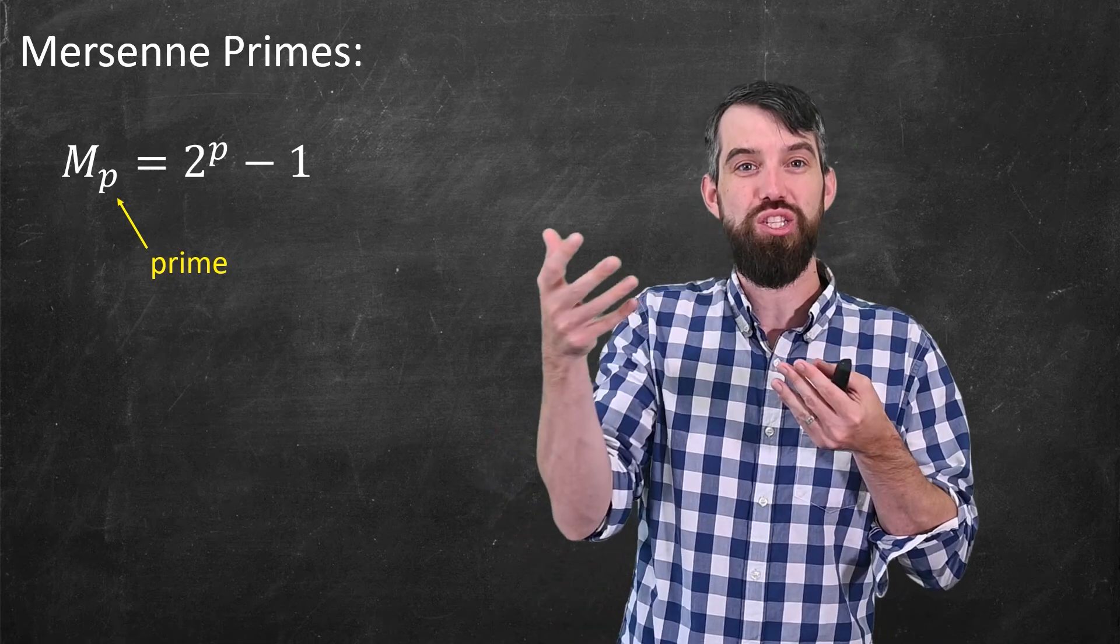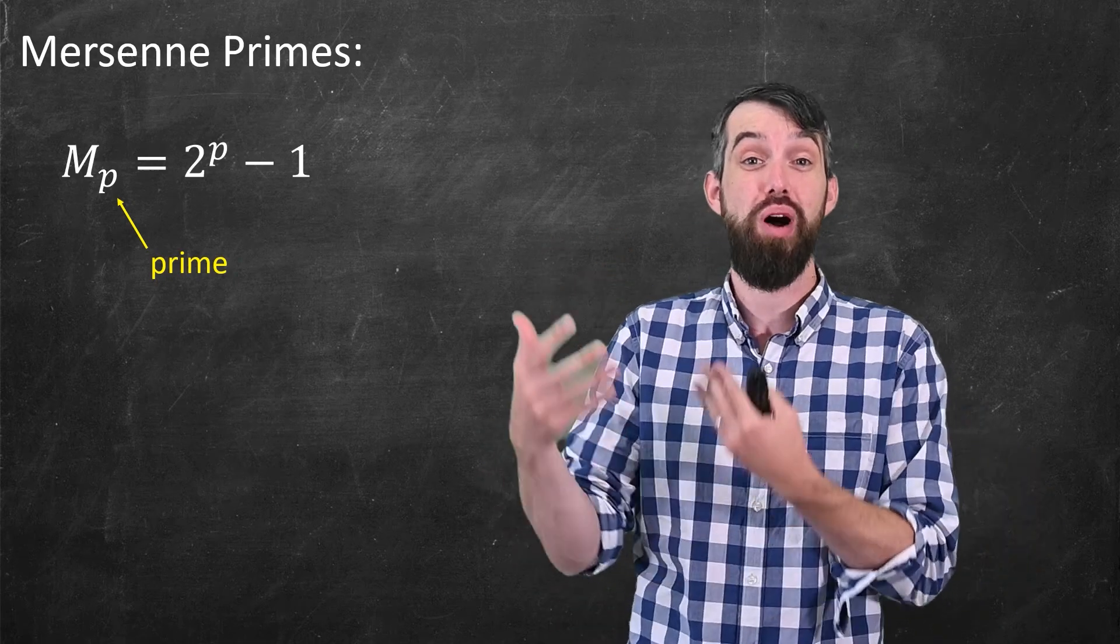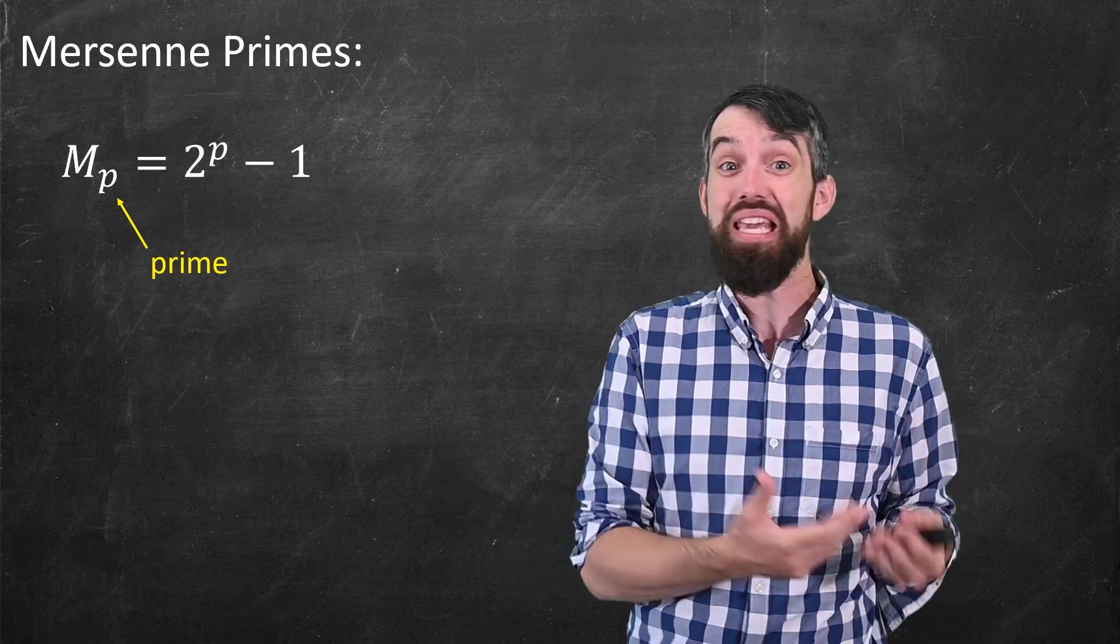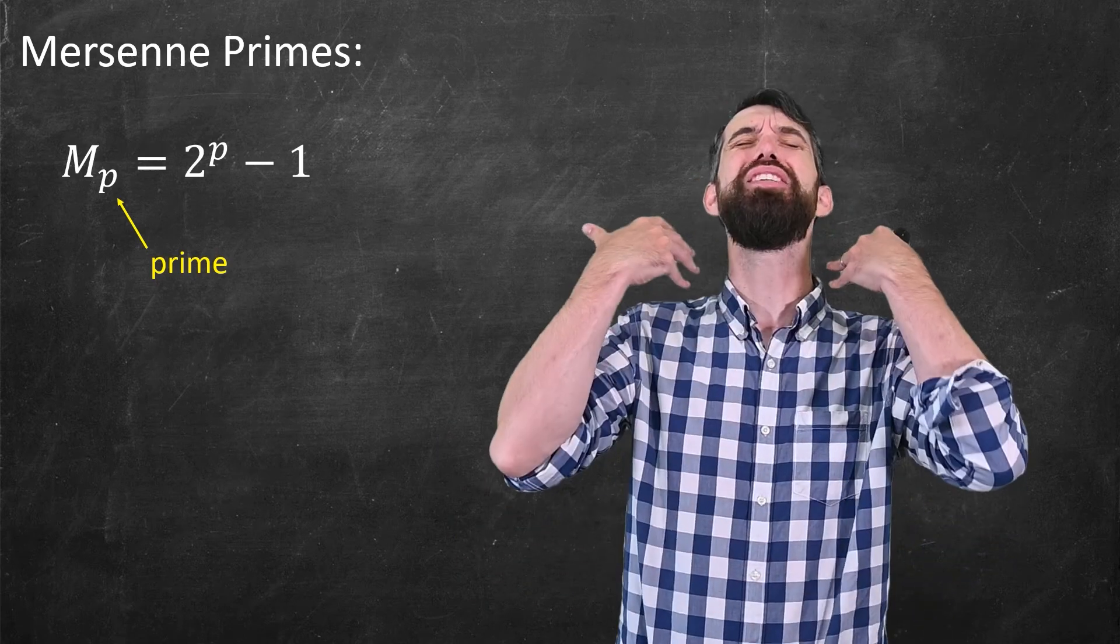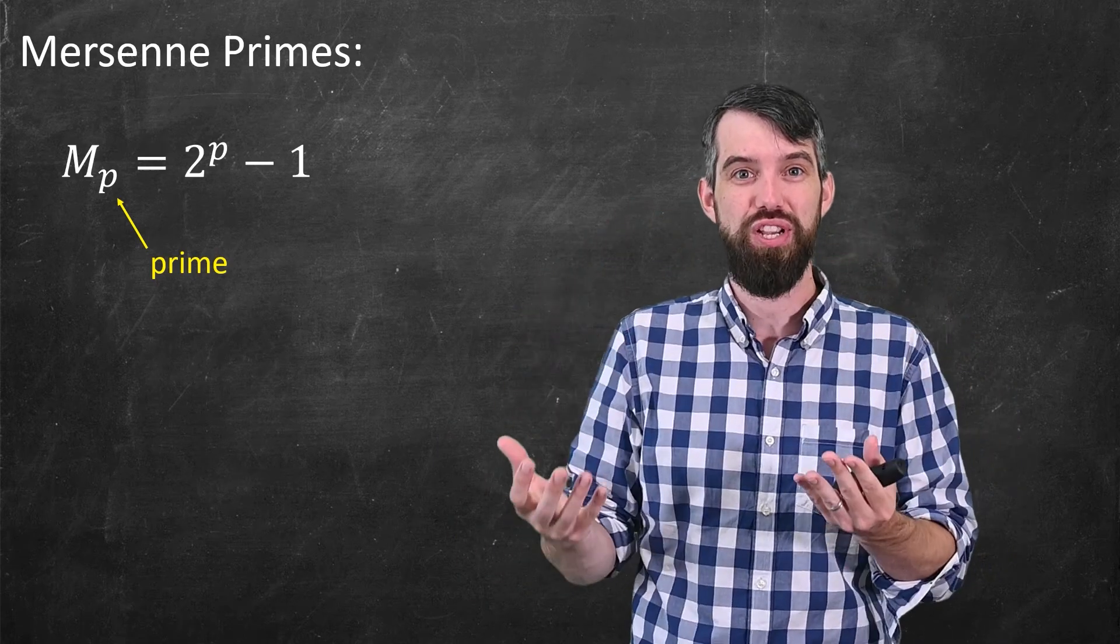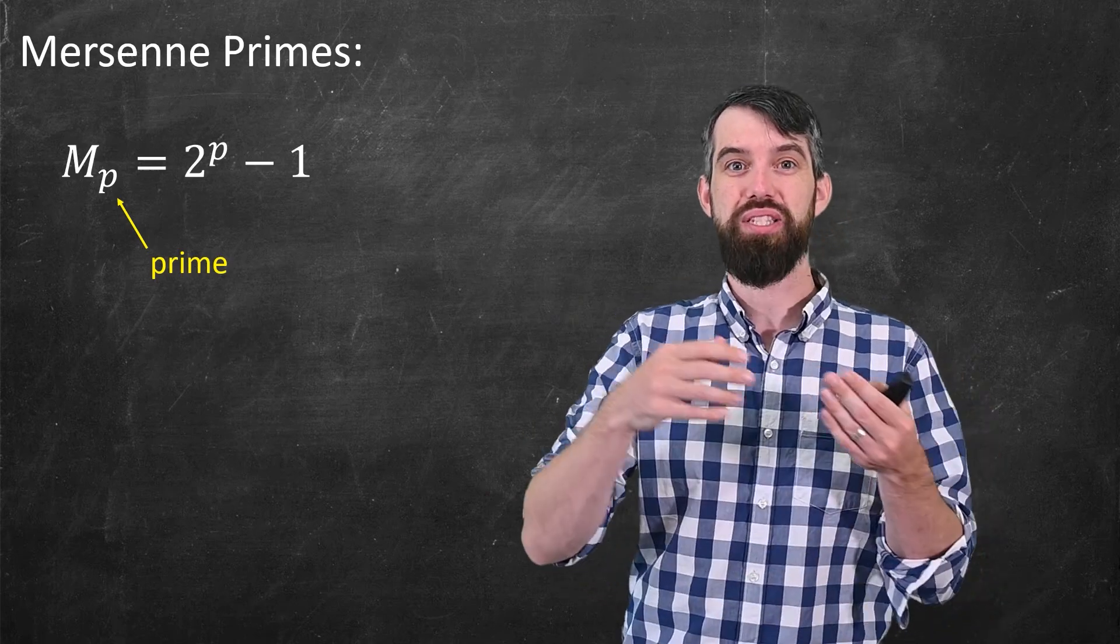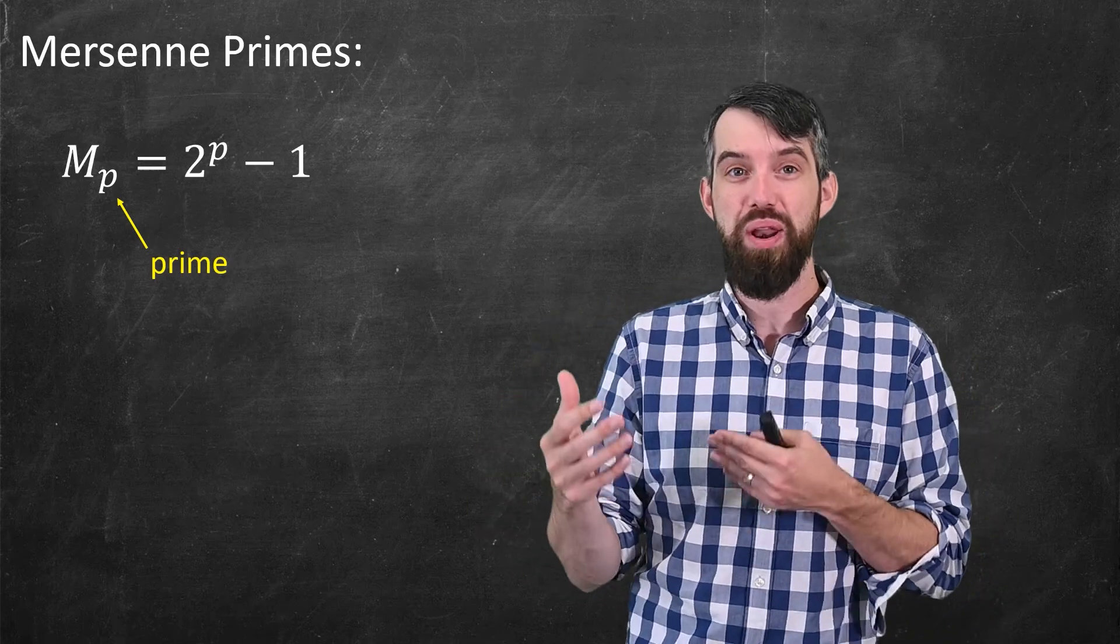then 2 to the p minus 1 is just some much, much, much larger number. If p is really big, then 2 to the p is just unfathomably large as it's an exponential function. The p here is a prime number, and we'll talk about why in a moment.